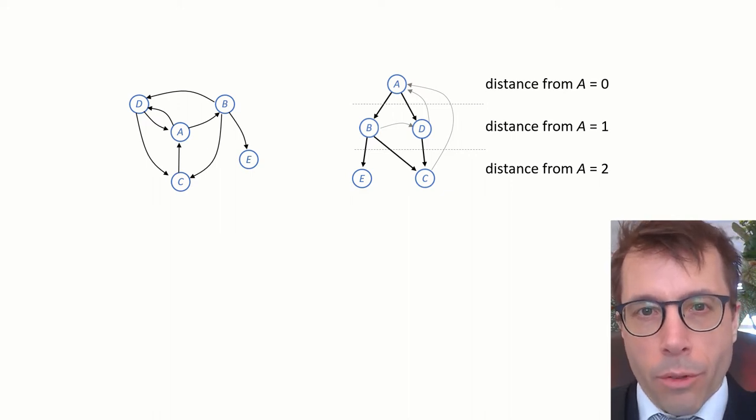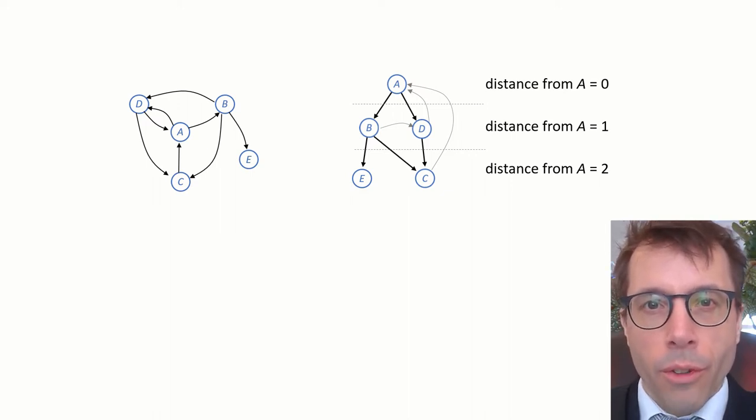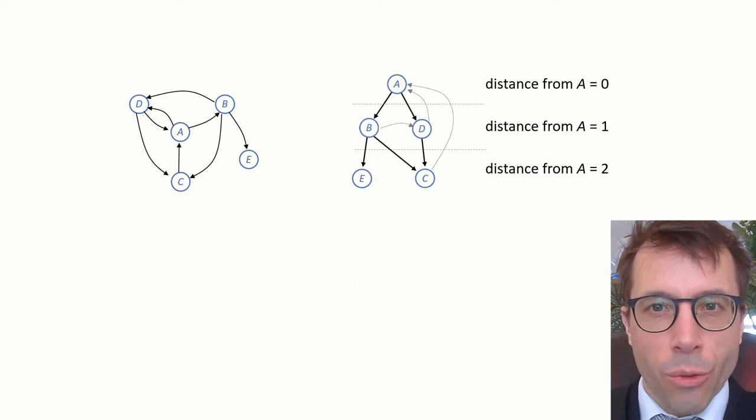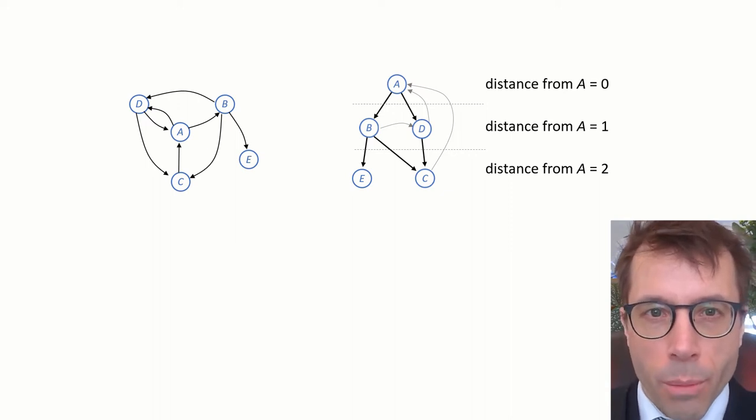The idea of breadth-first search is very simple: it's just visit A, then all vertices distance 1 from A, then all vertices distance 2, and so on. You can see why it's called breadth-first search, because it explores the entire breadth of this graph before it goes deeper.